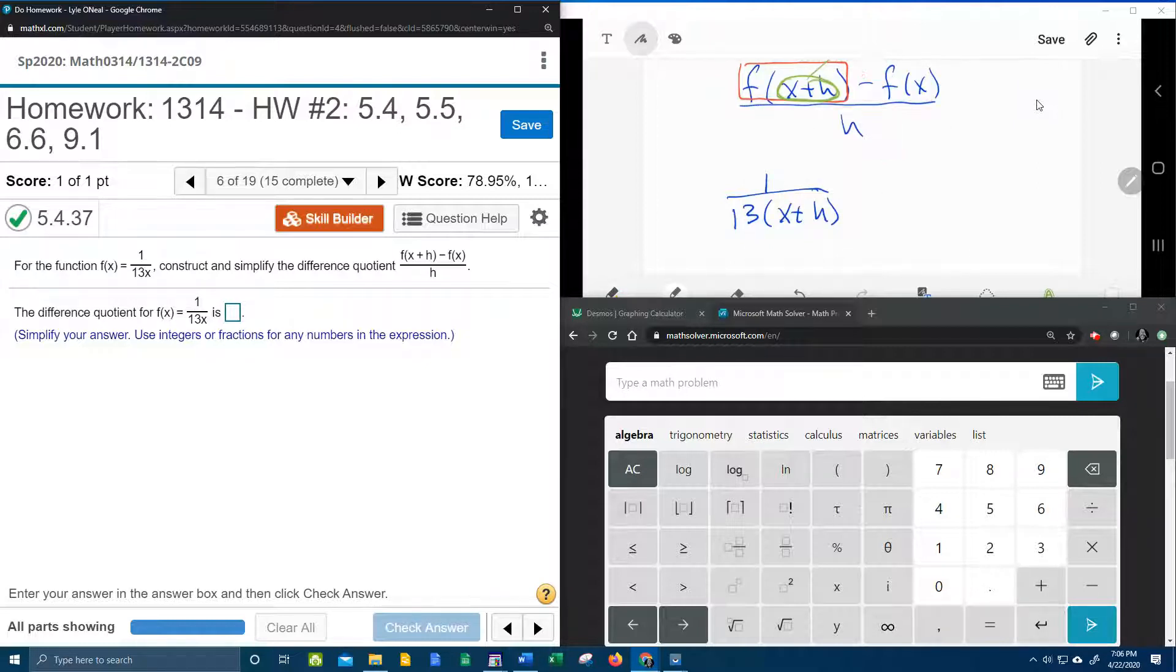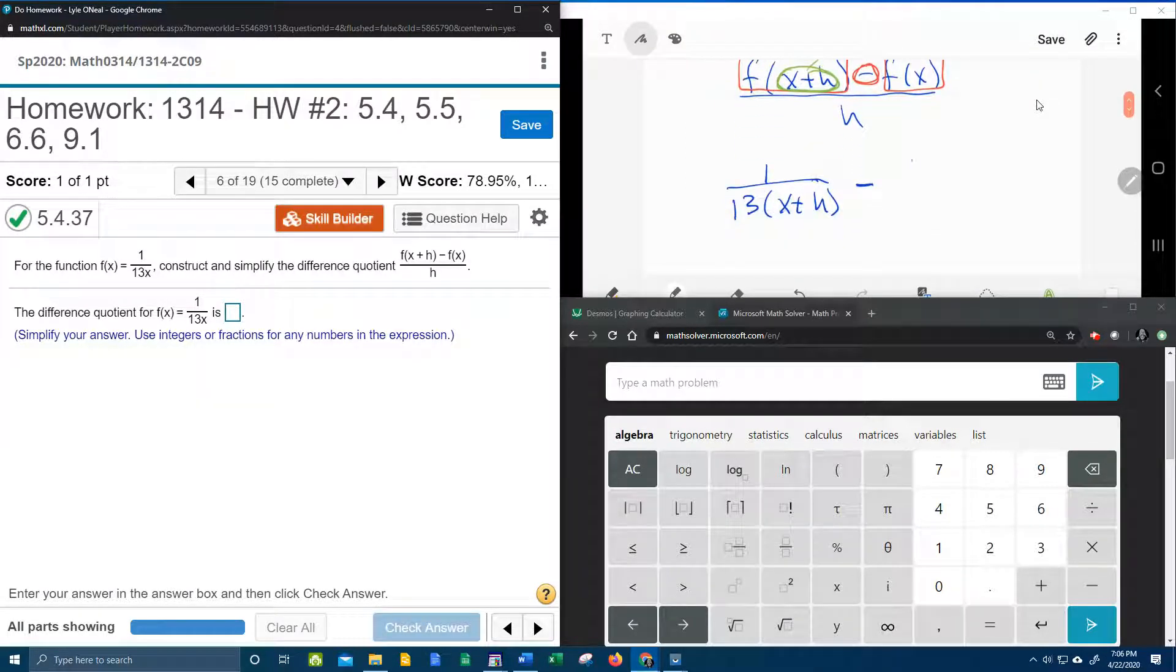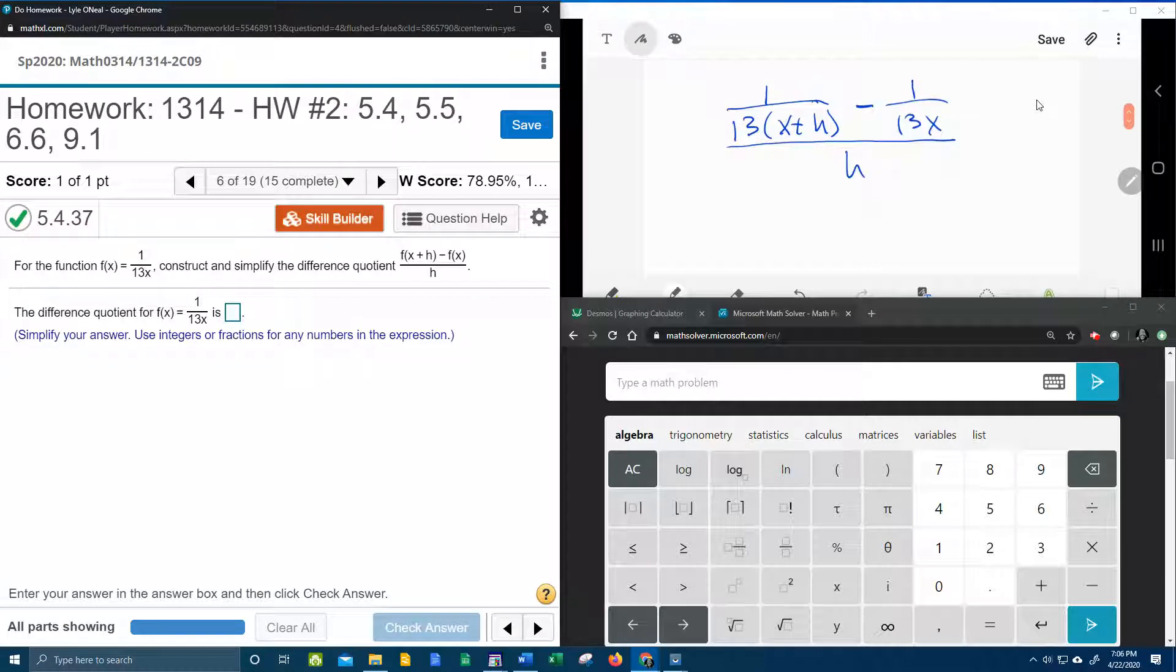Next, we're going to notice it says minus f of x, which means we're going to subtract the original function, which was 1 over 13x. And then notice the difference quotient says that is all over h. Now we have to simplify.